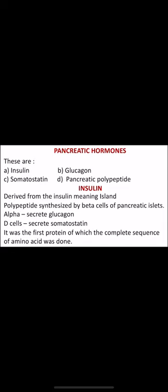Now we move to pancreatic hormones. There are four main pancreatic hormones: insulin, glucagon, somatostatin — secreted from delta cells — and pancreatic polypeptide. Insulin is derived from the Latin word 'insula,' meaning island, reflecting its origin in the islets of Langerhans.